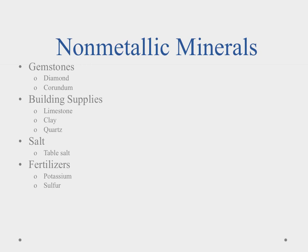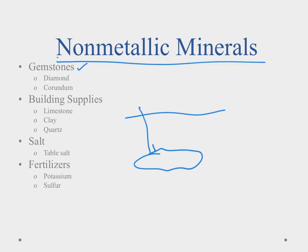The last category is non-metallic minerals. These are collected for profit when found in sufficient reserves. Perhaps the most common are gemstones — diamonds, corundum, and others — which are mineral resources we can profit from. Building supplies include limestone, clay, quartz, and gypsum — there's a lot of gypsum here in Vegas. Salt is another example; they drill holes into underground salt deposits, pump in water to dissolve the salt into brine, pump it out, and dry off the water to get table salt. We can also get fertilizer materials such as potassium and sulfur.